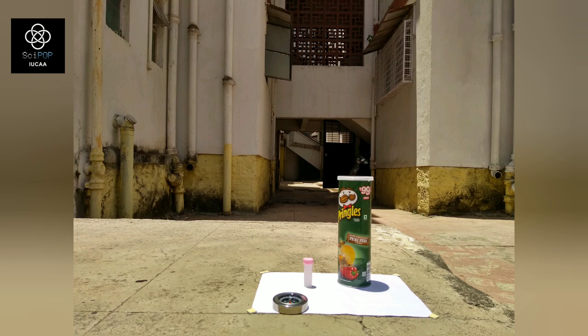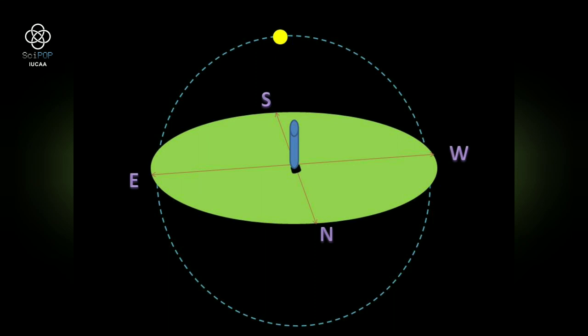So, we saw that the sun doesn't come exactly overhead every day at noon. Is there any day when it can be seen exactly overhead?